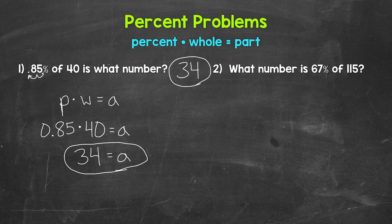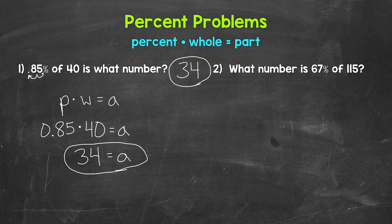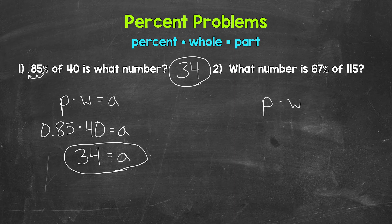Let's move on to number two, where we have what number is 67% of 115. So the wording here for number two is a little different than number one, but it's the same type of problem. Let's start with the equation. We have percent times whole equals part.